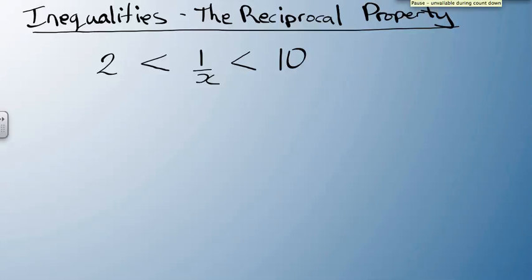Let's take a look at solving inequalities using the reciprocal property. Now if you look at this inequality, in some cases, their automatic response would be to take this x that's on the bottom of the denominator and multiply everything by x.